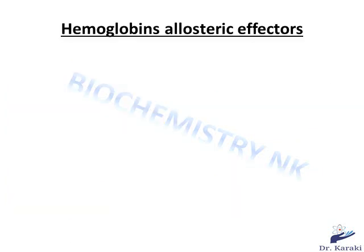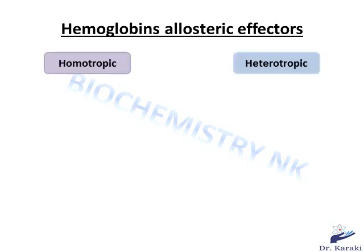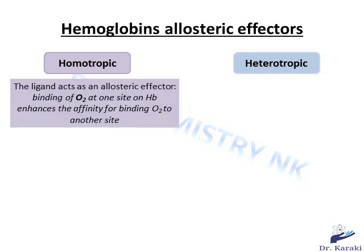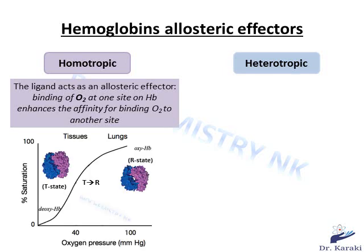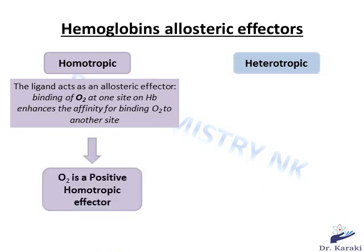Allosteric effectors can also be classified as homotropic and heterotropic. In the case of homotropic effectors, the ligand acts as an allosteric effector. For example, binding of oxygen at one site of hemoglobin increases the affinity of hemoglobin for binding oxygen at another site, shifting the hemoglobin conformation from T to R state. Since this effector increases the affinity for the ligand, it is called a positive effector — so oxygen is a positive homotropic effector.